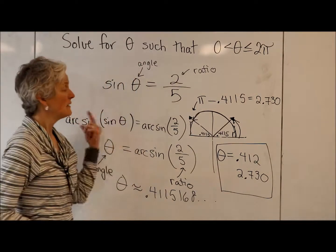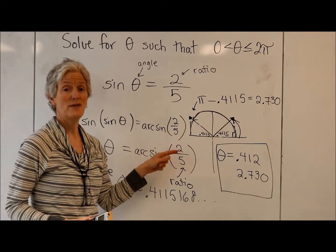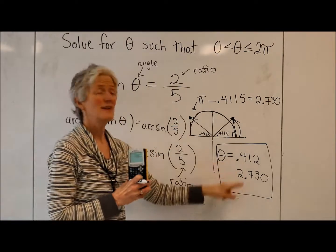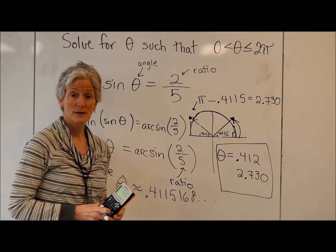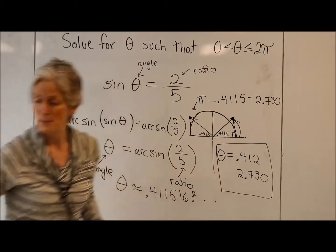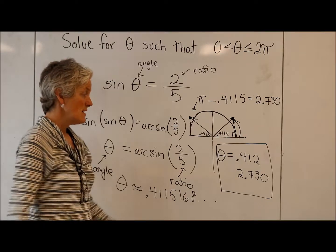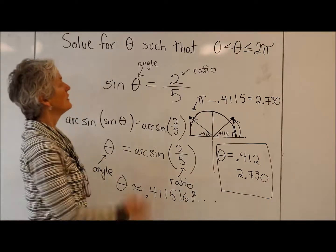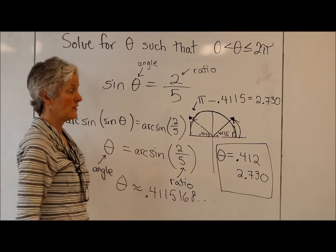Now, of course, you could check. You could plug those in, take the sine, and see if you get 2 fifths. Of course, you're rounding these off, so you're not going to get exactly 2 fifths. Even small rounding things, particularly when you're doing a trig function, will affect your answer. But there you go. We just solved this angle using arc sine or inverse sine.